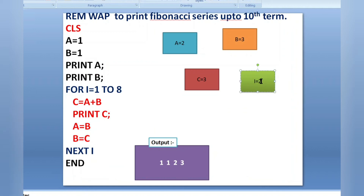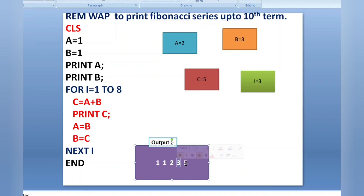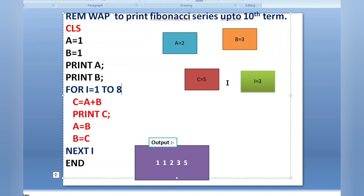I is incremented to 3, loop condition is still true. C equals A plus B: 2 plus 3 is 5. Print C — 5 is printed. We can verify: 3 plus 2, addition of last two numbers, gives the next number. The loop runs up to 8 times; when I reaches 9 the condition is false and we will have printed up to the 10th term.